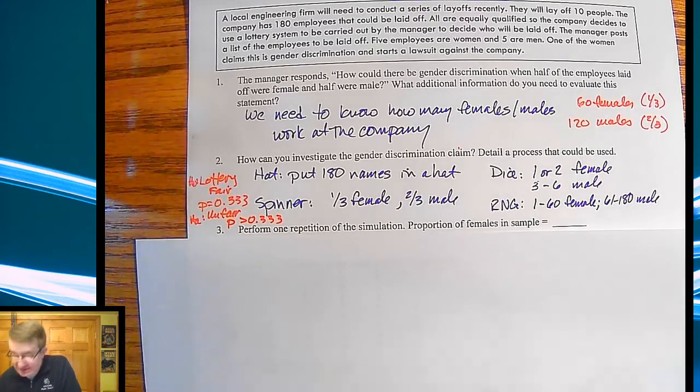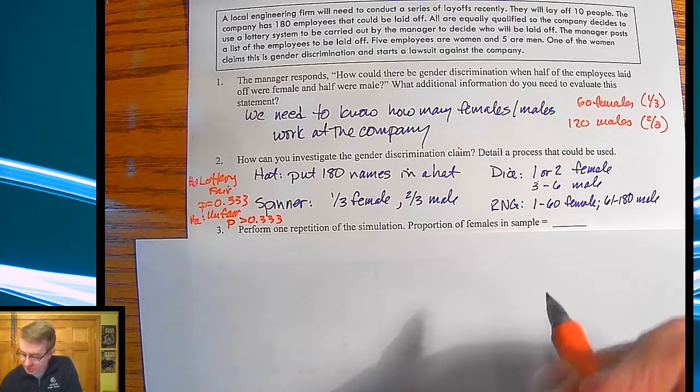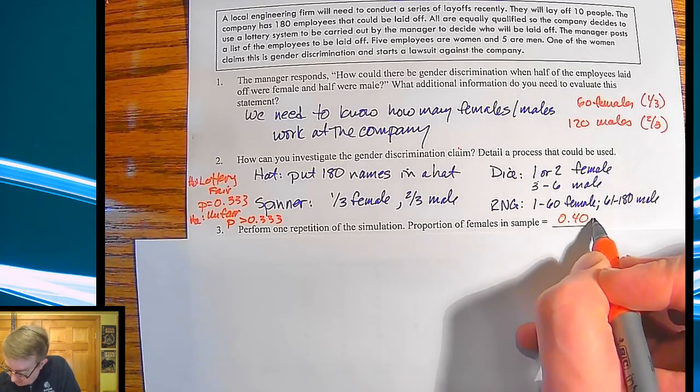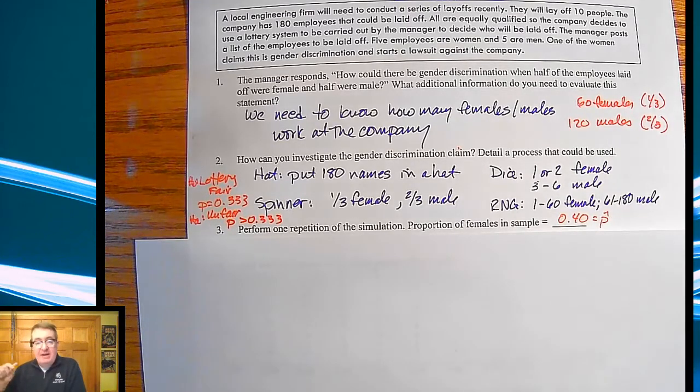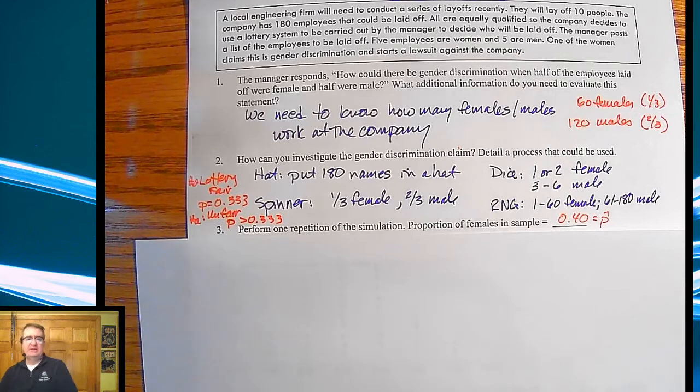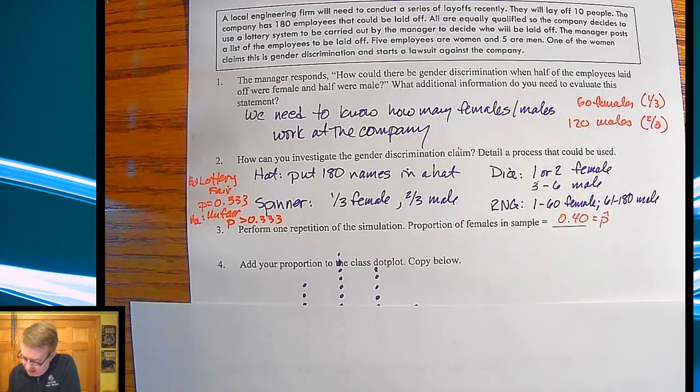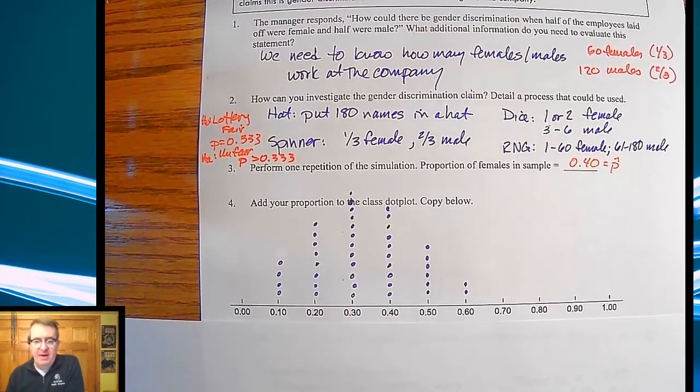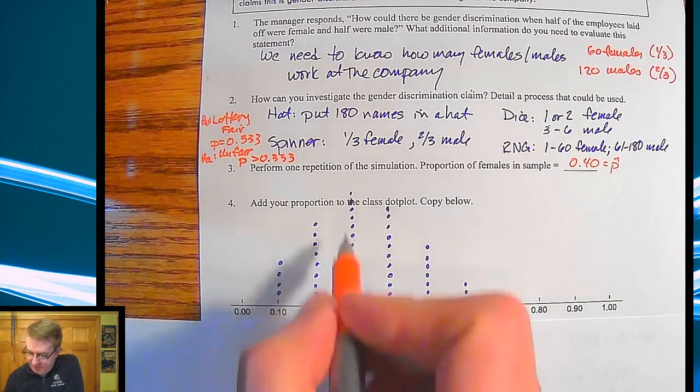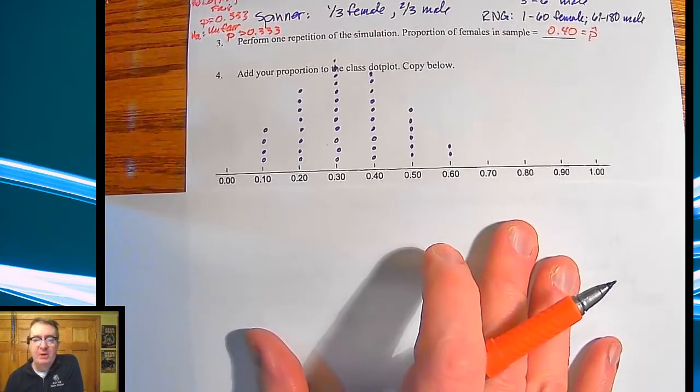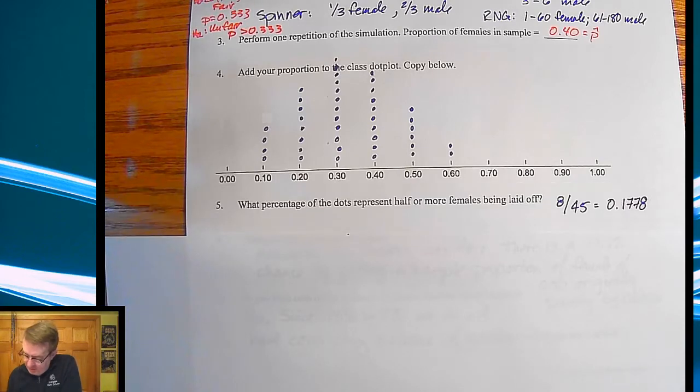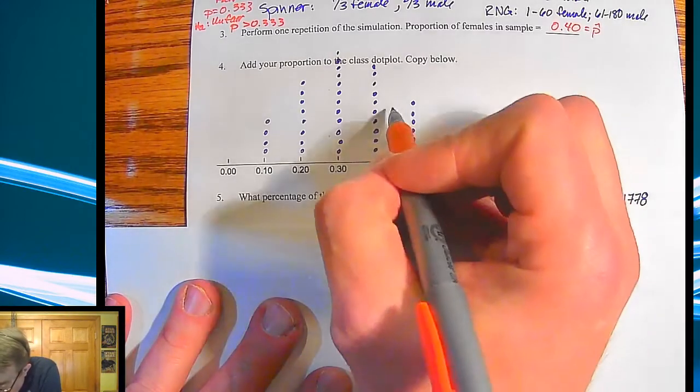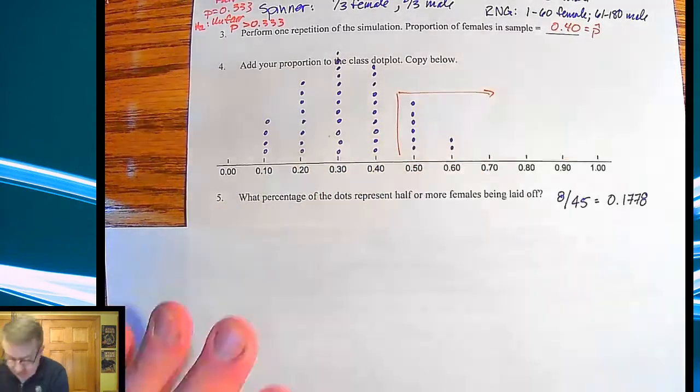They're going to do one repetition of simulation proportions in the female sample. So let's say we went through, and since we're only doing 10, all of our numbers should be nice and round. I ended up doing this because I only had like 20 some kids in class that day. I had them do it twice because it wasn't that hard. So we ended up coming up with 45 different samples. So you can kind of see the dot plot there.